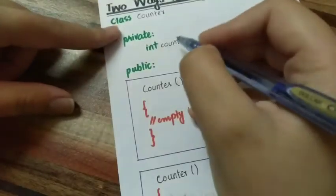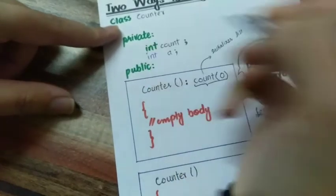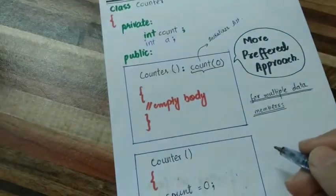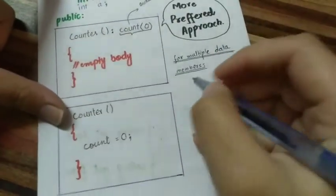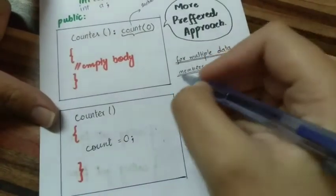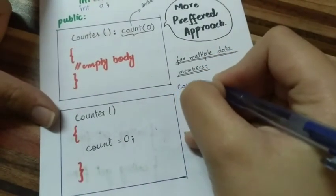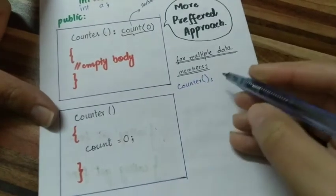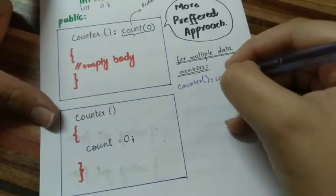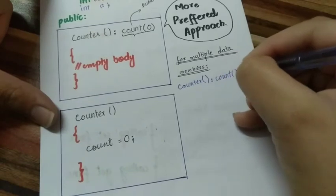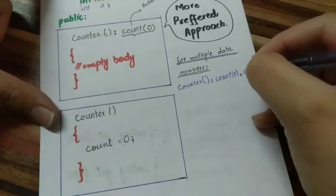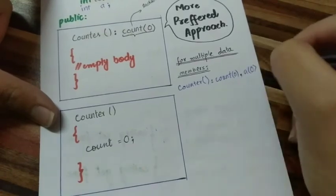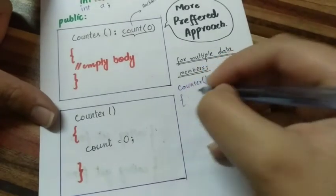Sometimes you have data members that are more than one. For example, you have one more data member int A. If you have other data members, then what do you need to do? Simply, for multiple data members, you have written class name, brackets, then colon. Then you have the first data member count. Here you have written zero value. Then simply comma and then another data member. This will be simple syntax and the body will again be empty.